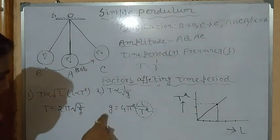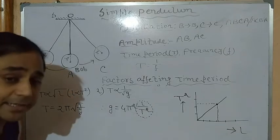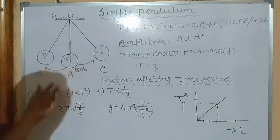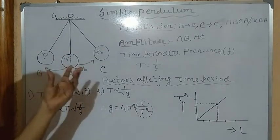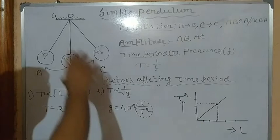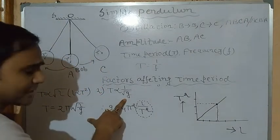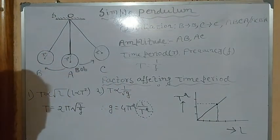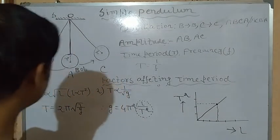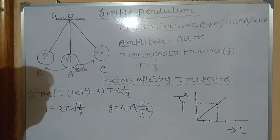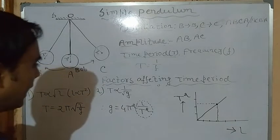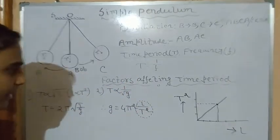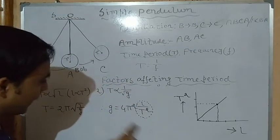From the formula T = 2π√(L/g), we can derive g = 4π²L/T². Importantly, the time period does not depend on the mass of the bob — more mass or less mass makes no difference. It also does not depend on the material of the bob, and it does not depend on the amplitude of the swing either.